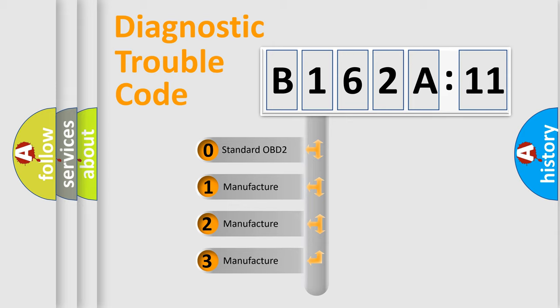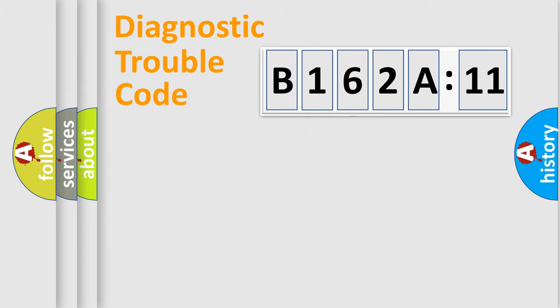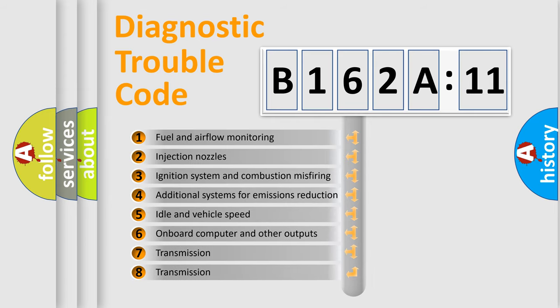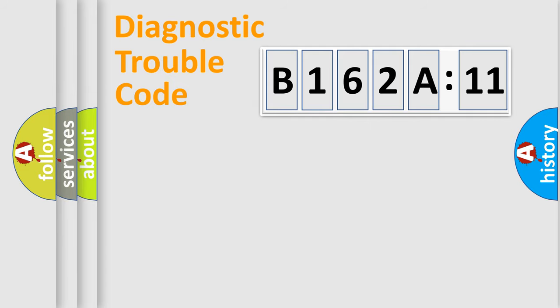If the second character is expressed as zero, it is a standardized error. In the case of numbers 1, 2, or 3, it is a more prestigious expression of the car-specific error. The third character specifies a subset of errors. The distribution shown is valid only for the standardized DTC code. Only the last two characters define the specific fault of the group.